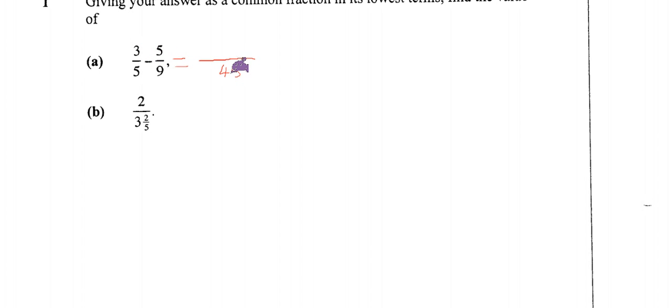And so I say 5 into 45, that is 9. 9 multiplied by 3, that is 27, minus 9 into 45, that is 5. 5 multiplied by 5, that is 25. So this gives me 27 minus 25, that is 2 over 45. So that is my final answer. I cannot take this any further because there is no common factor between 2 and 45. That is basically the lowest terms for this one.